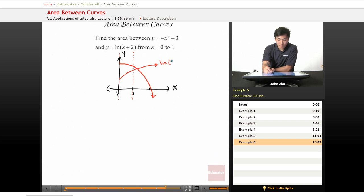So here's ln of x plus two and here is negative x squared plus three. So we know that negative x squared plus three is always higher than ln of x plus two.